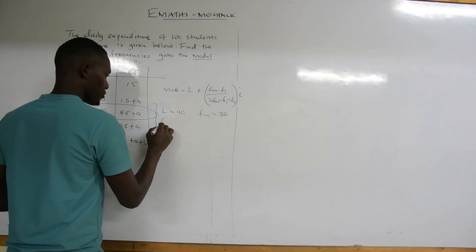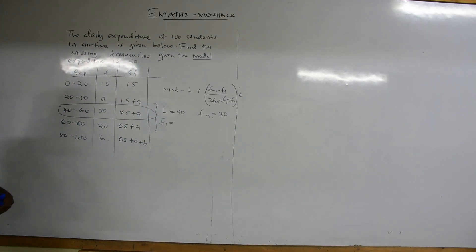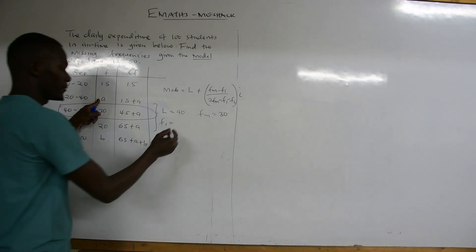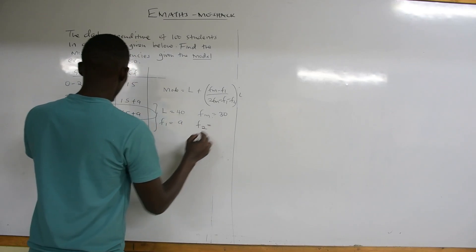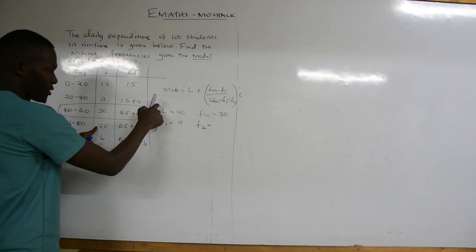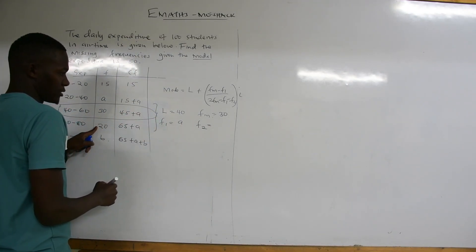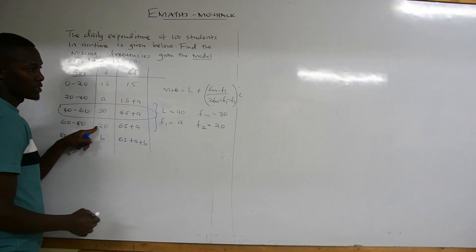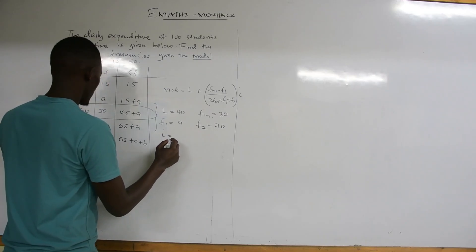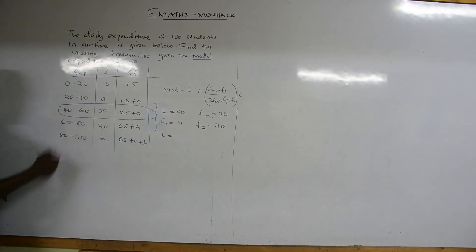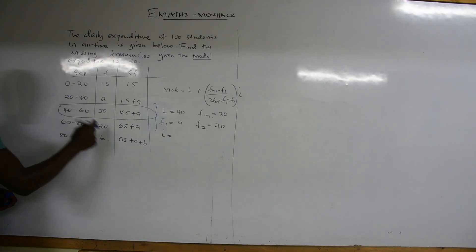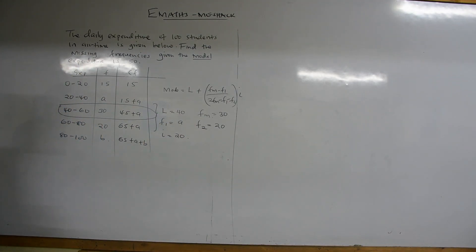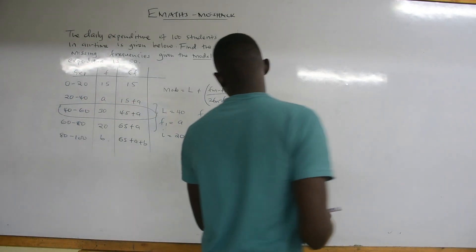Our F1 is the frequency of the class above the modal class. The frequency is A. F2 is the frequency below, so F2 is 20. Then what is missing? The interval. The interval will be given by subtracting the two values, which gives you 20. So you have everything that you need and you have the value of the mode being given.